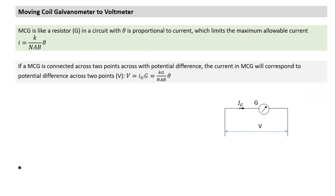Suppose two points A and B are connected in the circuit with potential difference V. If an MCG is connected across points A and B, current IG will flow through the galvanometer. The relationship between V, IG, and G is V = IG × G. That's the basic relationship — nothing very surprising.